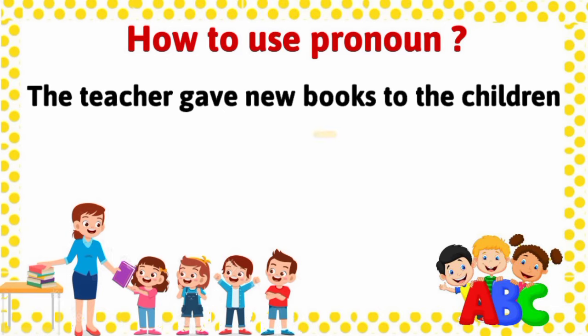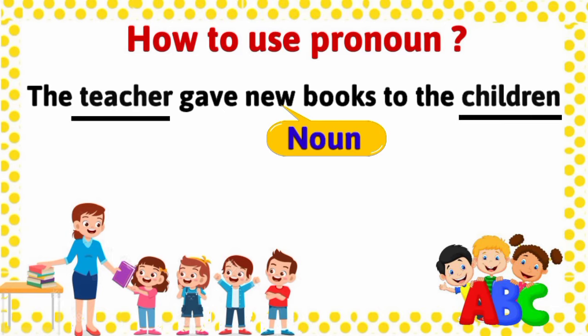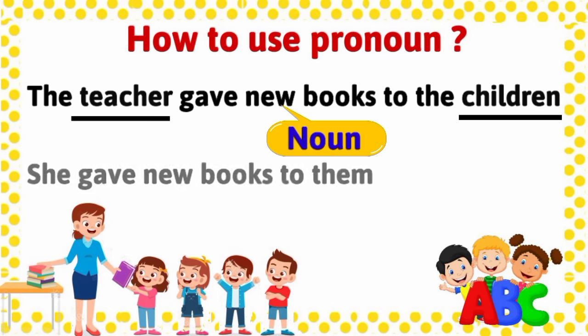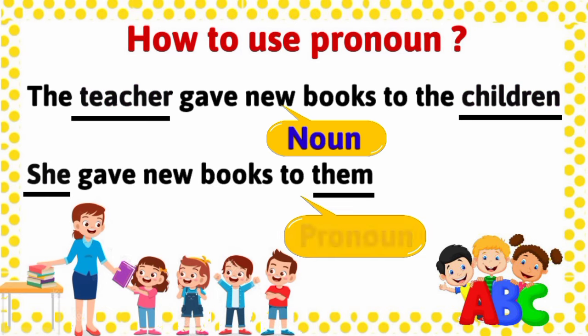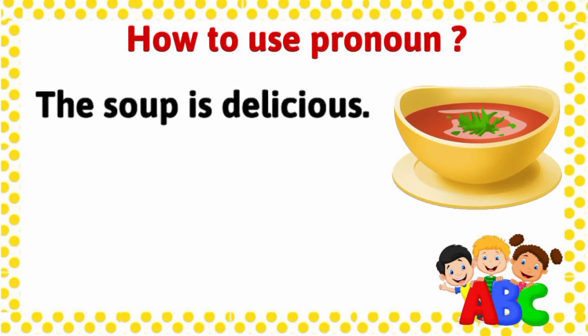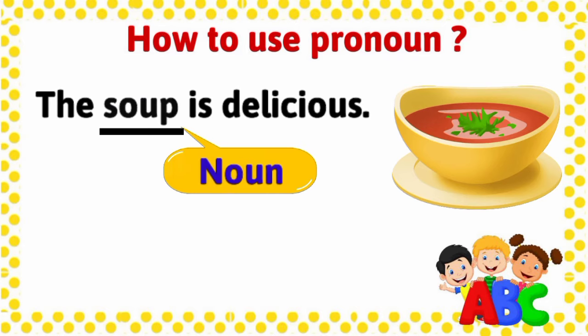'The teacher gave new books to the children.' The words 'teacher' and 'children' are both nouns. Now we will see the use of pronouns in this sentence: 'She gave new books to them.' We use the word 'she' in place of 'teacher' and 'them' in place of 'children,' so 'she' and 'them' are both pronouns.